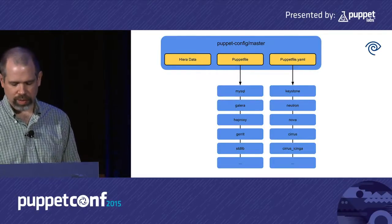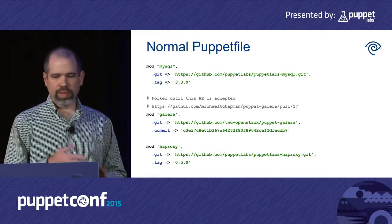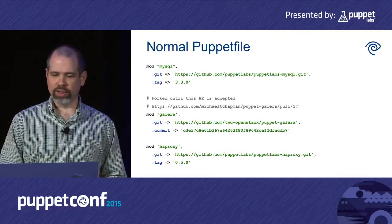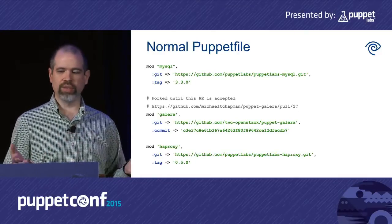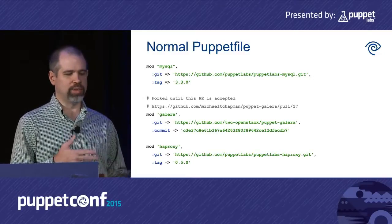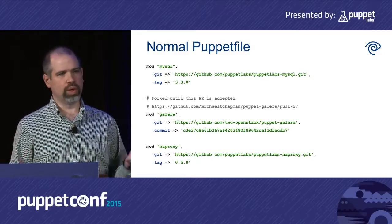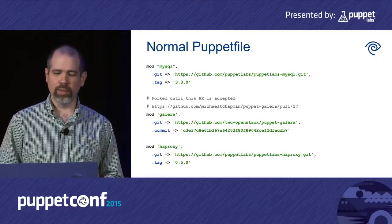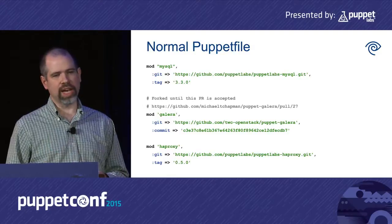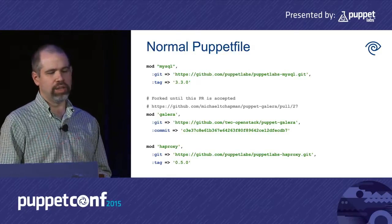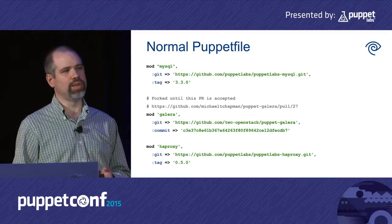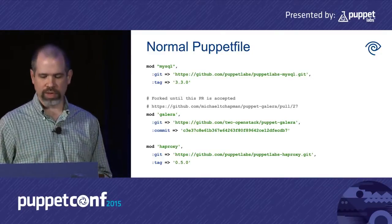You may notice we have two Puppetfiles: a Puppetfile and a Puppetfile.yaml. In our normal Puppetfile, we install everything from Git, locked to a specific tag or commit. We don't put branch names in there because you don't know what the branch will point to at any given time. Also, R10K has optimizations in place — if you're using a tag or commit, it doesn't have to go across the network to verify the version; it can do that entirely as a local check, which makes a big performance difference.